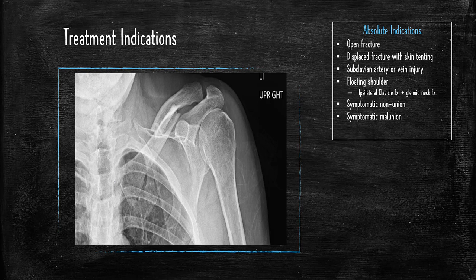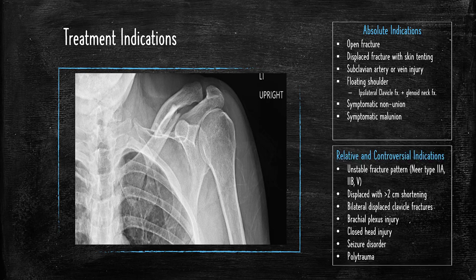Absolute indications are: open fractures (which are rare for clavicle fractures), displaced fractures that cause skin tenting (because tenting can cause skin necrosis), subclavian artery or vein injury, floating shoulder (which is an ipsilateral clavicle fracture plus a glenoid neck fracture), symptomatic non-unions, and symptomatic malunions. The controversial relative indications include: unstable fracture patterns like Neer type 2 and 2B as well as type 5, displacement with greater than 2 centimeters of shortening, bilateral displaced clavicle fractures, brachial plexus injuries, closed head injuries or seizure disorder (because they're prone to falling), and poly trauma.